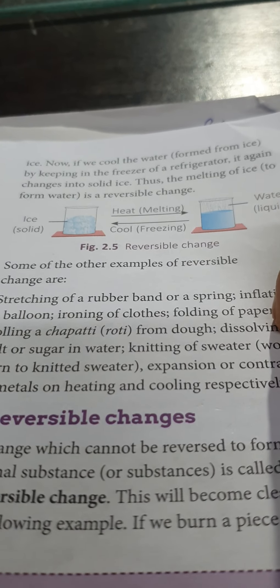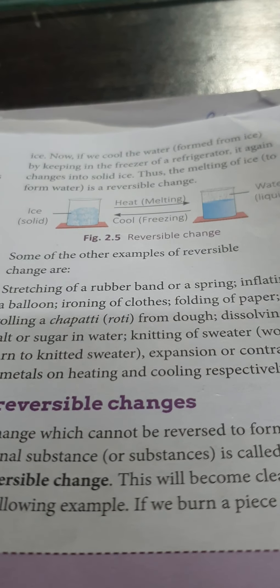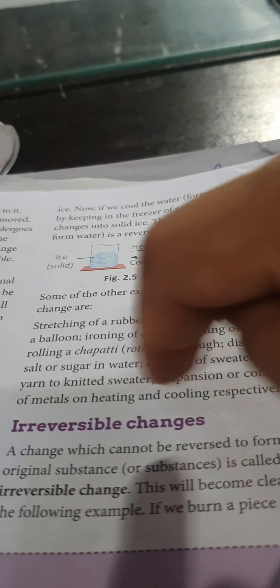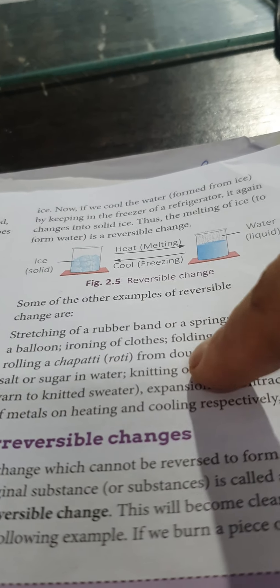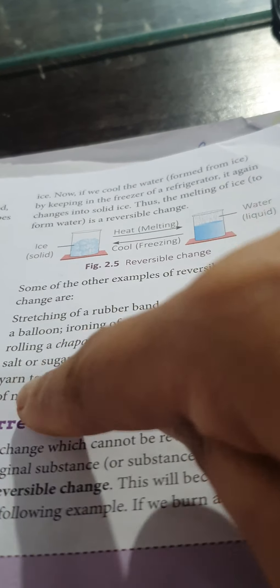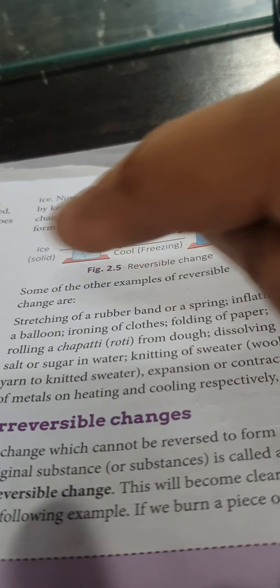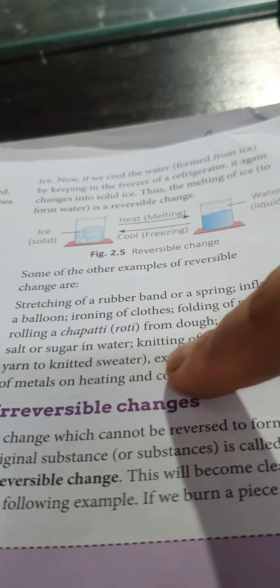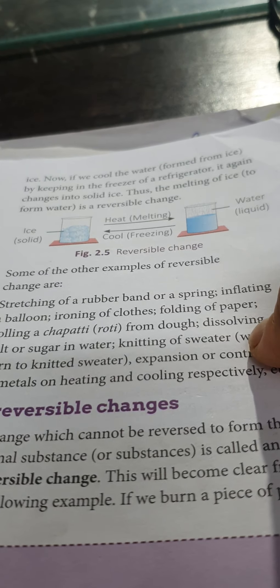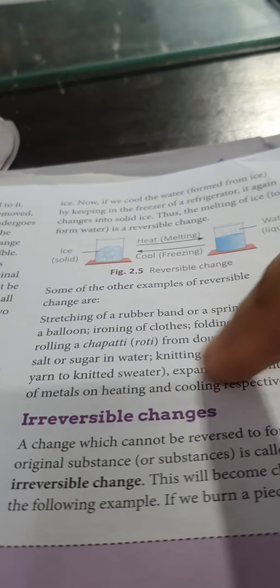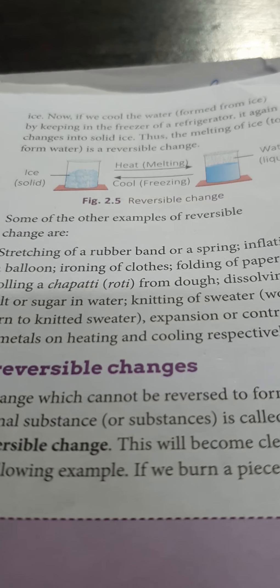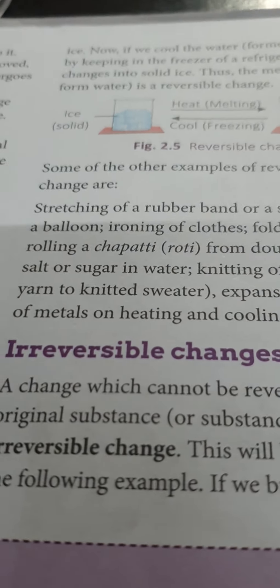Some other examples of reversible changes are: stretching of a rubber band or a spring; inflating of a balloon; ironing of clothes; folding of paper; rolling a chapati from dough — not cooking of chapati, just rolling it, which can be undone; dissolving salt or sugar in water; knitting of a sweater — wool and yarn can be knitted and unravelled; and expansion or contraction of metals on heating and cooling respectively.